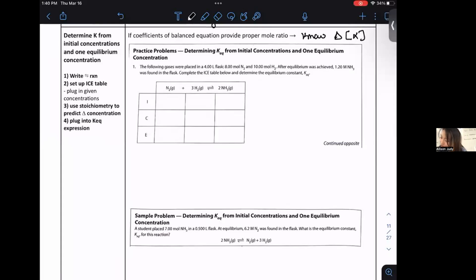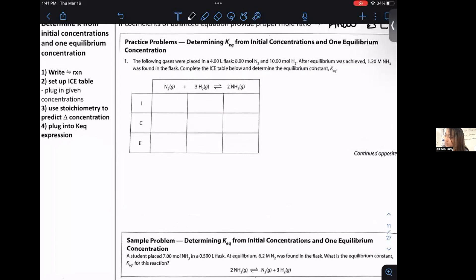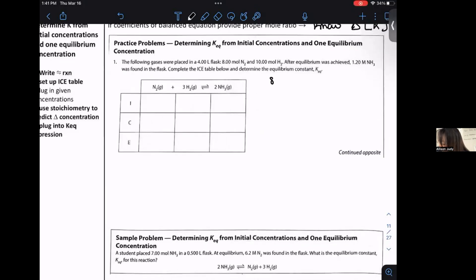So for this first type of problem, this is your first type of equilibrium problem, where you're going to determine the K E Q value from the initial concentrations and one given equilibrium concentration. So here's the big idea. If coefficients of balanced equations provide proper mole ratio, what we can do is we can know the change. We can know the change in concentration of your respective species. So for example, for this first problem, we have the following gases were placed in a four liter flask, eight moles of N2, 10 moles of H2. And after equilibrium was achieved, 1.20 molar NH3 was found. So what you do is to set up your ice table. You set it up ICE. You put a column for each chemical species. So you would have to write your equilibrium balance chemical equation first. So step one, write your equilibrium reaction balance. Step two, set up the ice table.